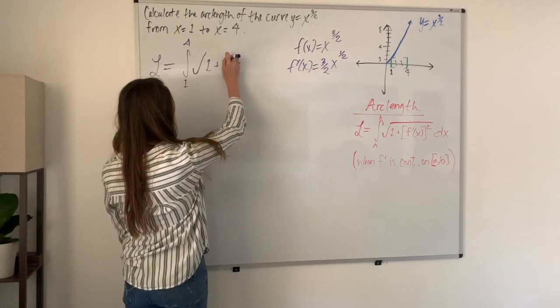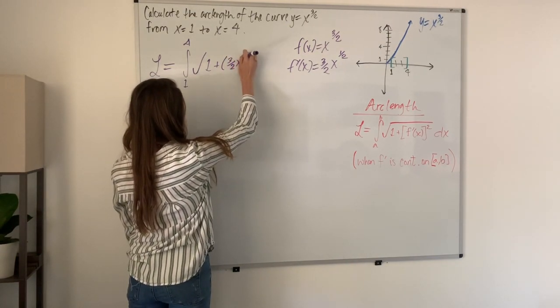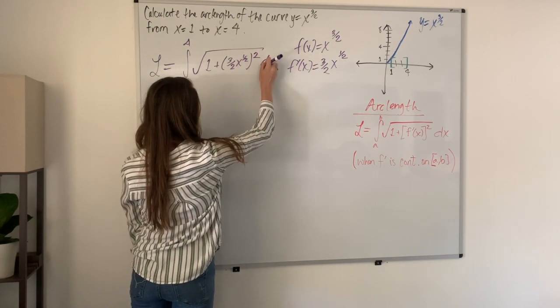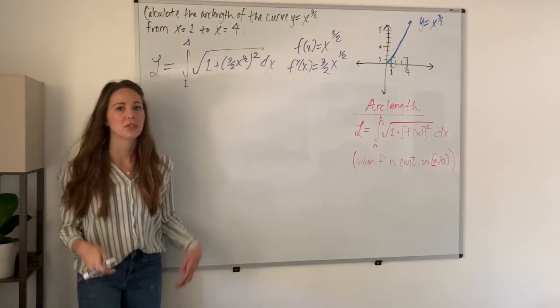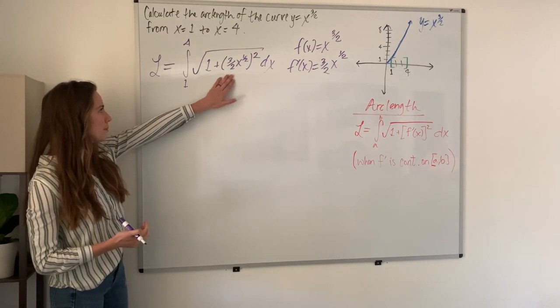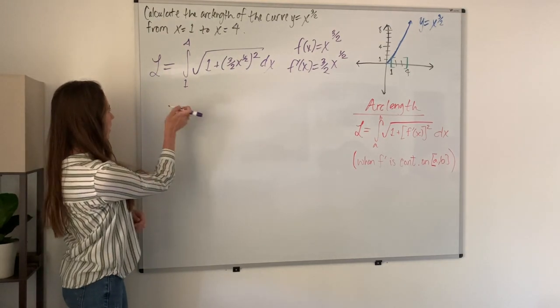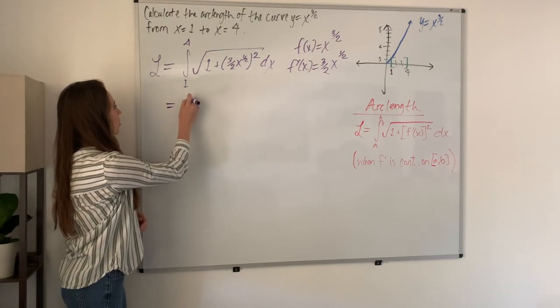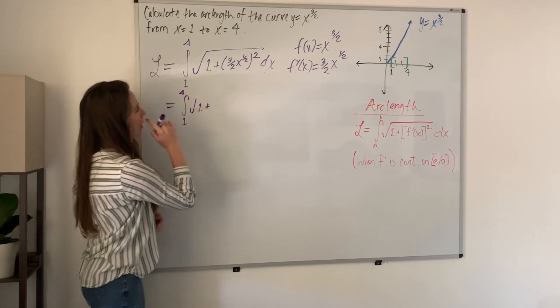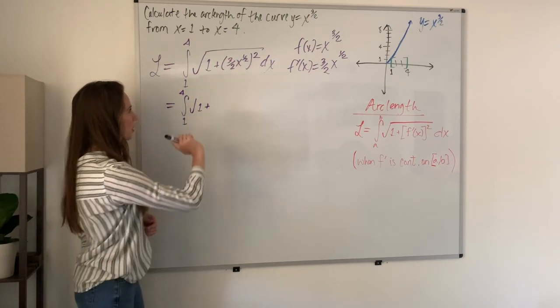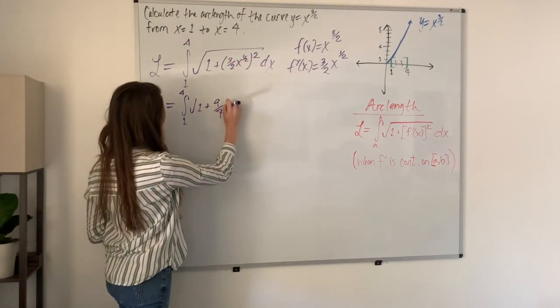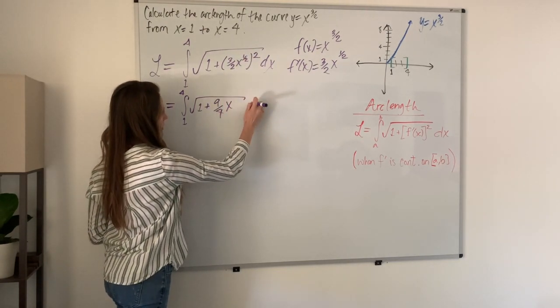We can go ahead and plug that in: 3 halves x to the 1 half power squared dx. Now we have our setup and all we have to do is integrate. First I'm going to rewrite this and square that. We have the integral from 1 to 4 of the square root of 1 plus, and when we square 3 halves we get 9 fourths, and x to the 1 half being squared is just x dx.